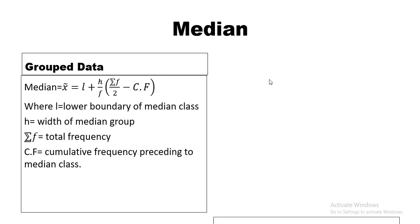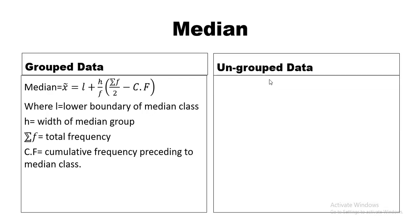For ungrouped data, the formula is (n + 1) / 2. This formula does not give you the final answer — it tells you the position of the median. We then go back to the data and find the value at that position. So for ungrouped data, we first find the position, then identify the median value.